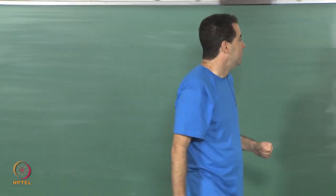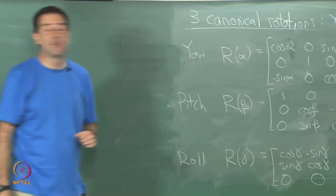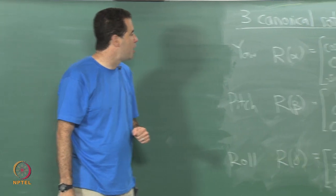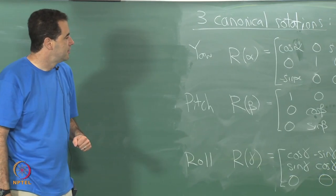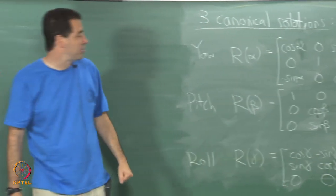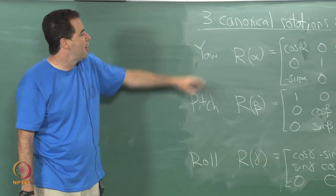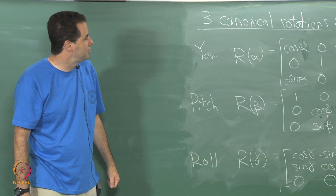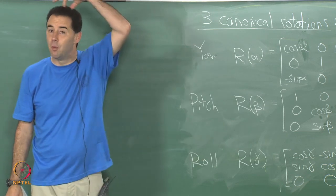Okay, let us continue onward. We have three canonical rotations as I said last time: yaw, pitch and roll, and these are the three-dimensional rotation matrices that achieve each of these. Yaw is rotation about which axis though? The y axis.